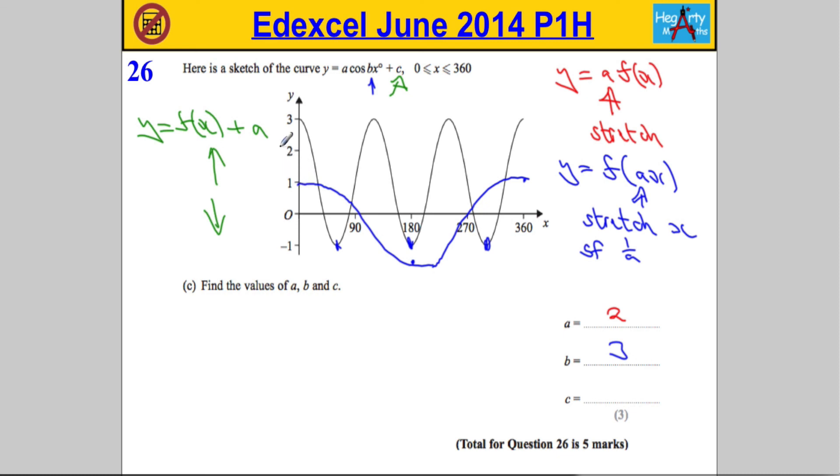Now the function has—well if we doubled the function it would have gone from two to negative two. It actually now goes from three to negative one, so that tells me that it's been actually shifted up by one place.